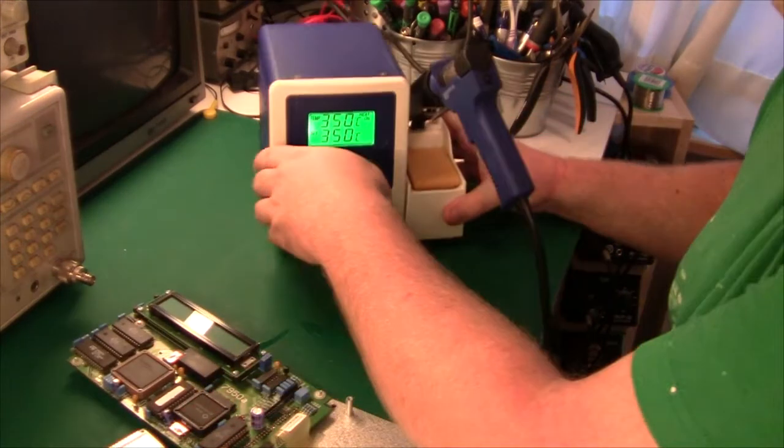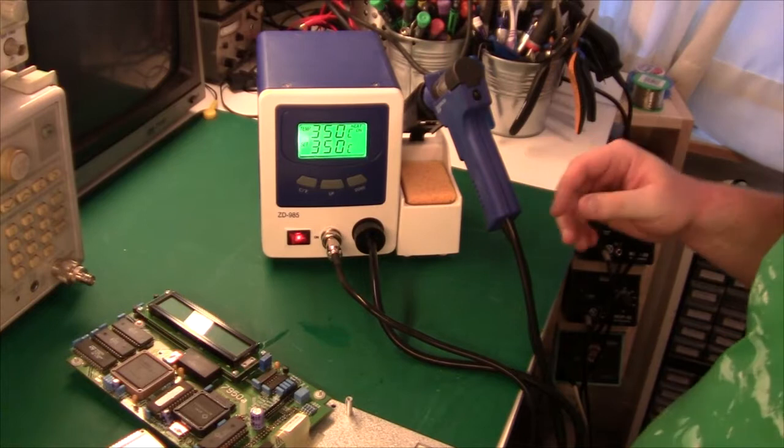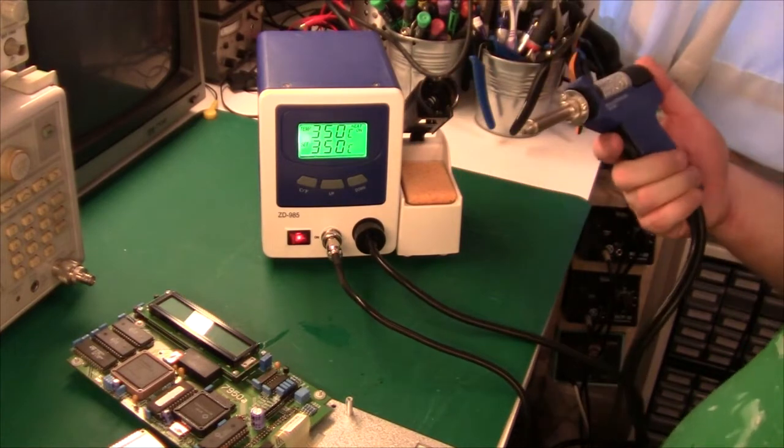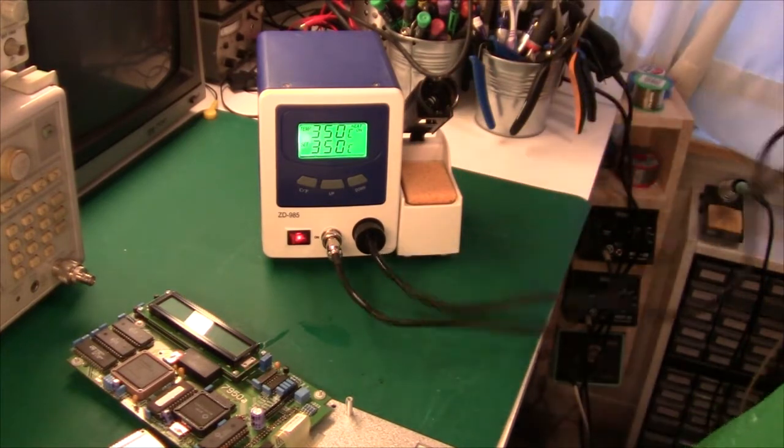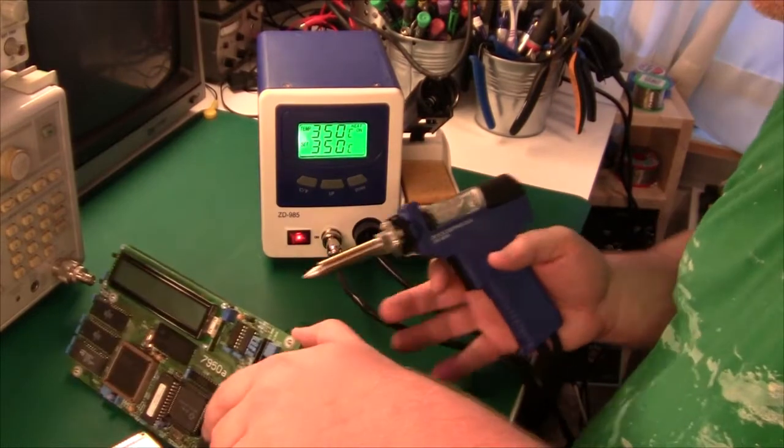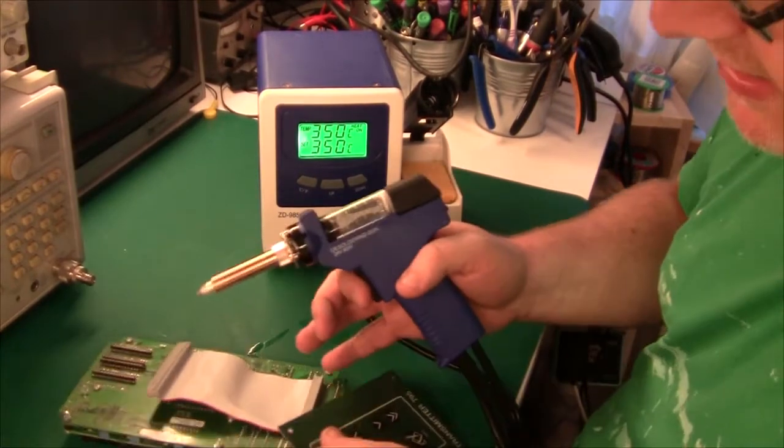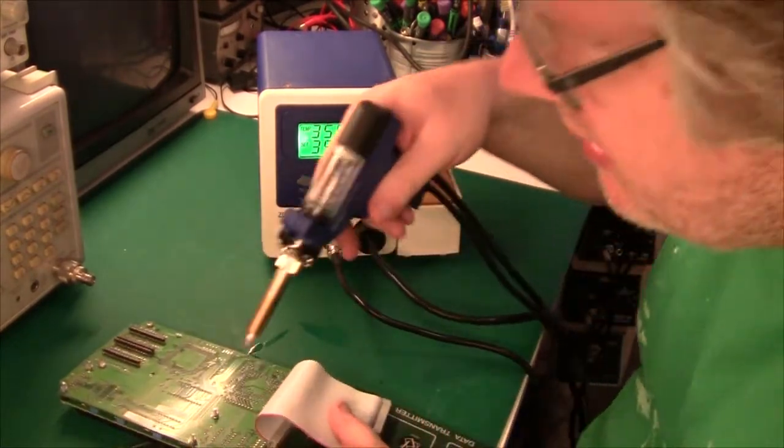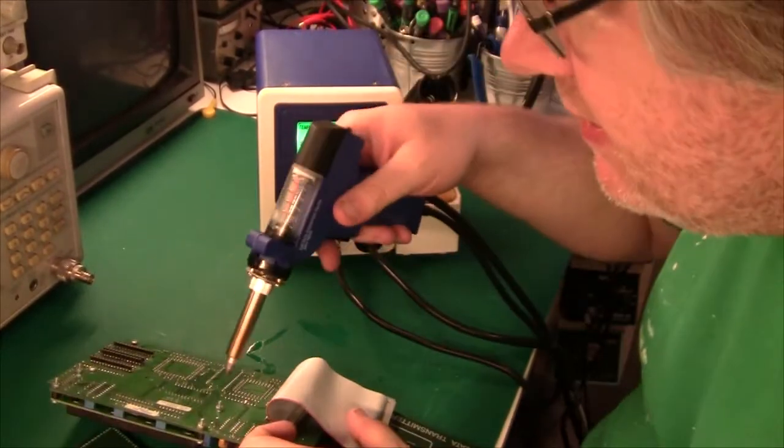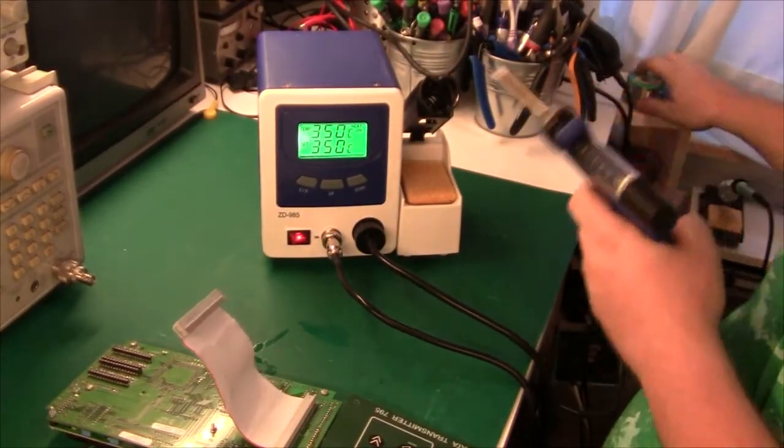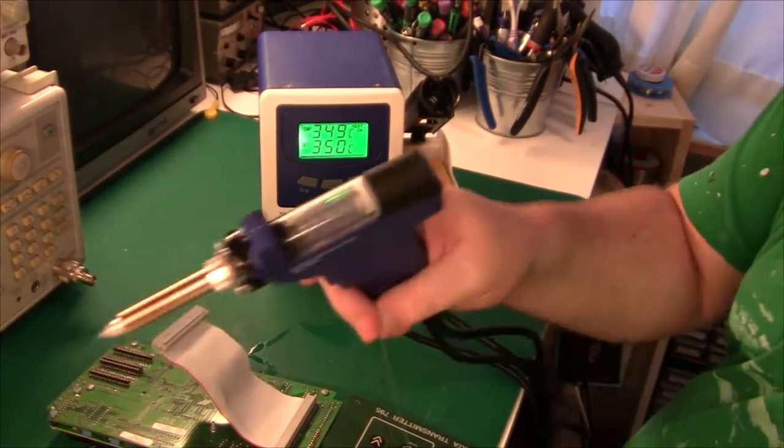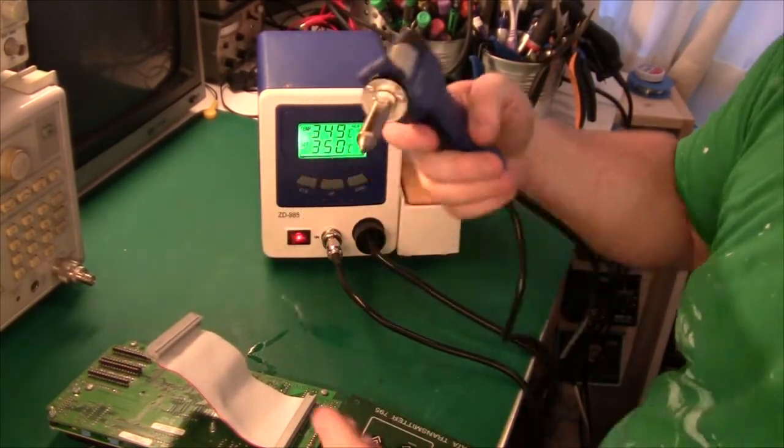So I set it to 350 degrees. And unlike David Jones, I don't really care about temperature settings. As long as it melts the stuff. I'm pretty happy with that. So let's just see. We probably need to tin it first. Most desoldering equipment needs to be tinned.